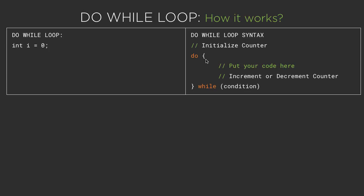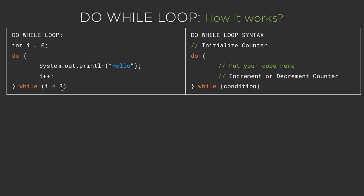The syntax is: do, followed by curly bracket, then put your code, increment or decrement the counter as required, then close the curly bracket followed by while, and then check the condition. On the left hand side, let us check the code snippet. Here at the top, int i equal to 0 is a simple initialization of the counter variable, followed by do bracket, then print hello, then i++, followed by while, and then the condition. Here our condition is i is smaller than 3, so we want to print hello 3 times. If you followed my previous two videos, you will not face any difficulty understanding this.